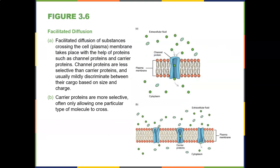Facilitated diffusion involves those channel proteins in the plasma membrane. Substances crossing the cell membrane take place with the help of carrier proteins and channel proteins. Channel proteins are less selective than carrier proteins and usually only mildly discriminant between cargo based on size. Carrier proteins are more selective, often allowing only one particular type of molecule to cross — like having a secret code to get in the back door.